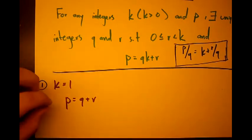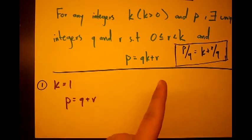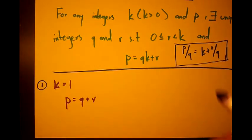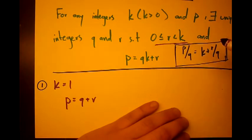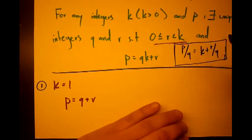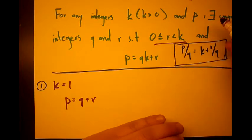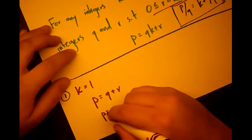the first case we're going to see is where k equals 1. And if k equals 1, then we're going to plug it in as 1 here and get p equals q plus r. But as we know from this statement right here, r has to be less than k but greater than or equal to 0. And if k is 1, r has no choice but to be 0, therefore p equals q.